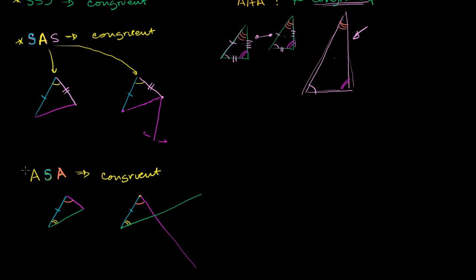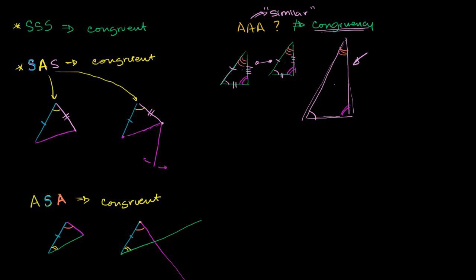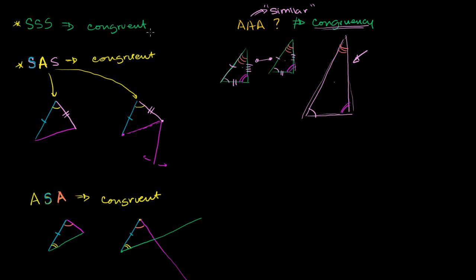Now let's try angle, angle, side. In some geometry classes, and maybe if you have to go through an exam quickly, you might memorize that side, side, side implies congruency, side, angle, side implies congruency, and so on. I'm not a fan of memorizing it — it might be good for time pressure, but it's good to just go through this logic. If you're wondering whether angle, angle, angle works — no. I can find a case that breaks it down. If these other postulates work, try to verify for yourself that they make logical sense.